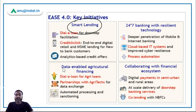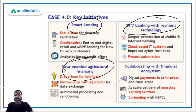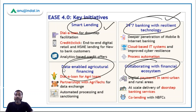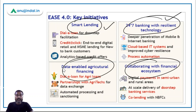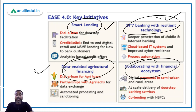The four key initiatives under EASE 4.0 are: smart lending — how a bank provides smart lending to its customers; 24/7 banking with resilient technology — how a bank provides round-the-clock banking services; data-enabled agricultural financing — how efficient they are in providing agricultural financing; and collaborating with the financial ecosystem.